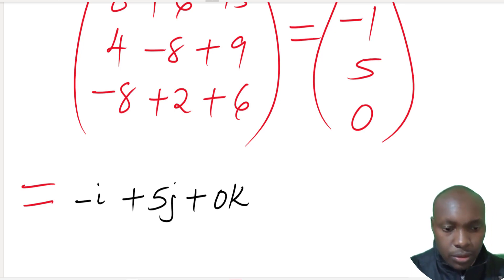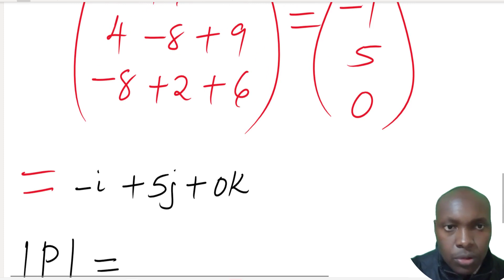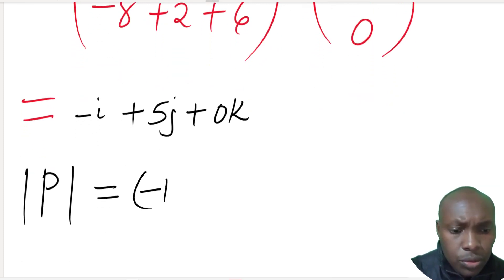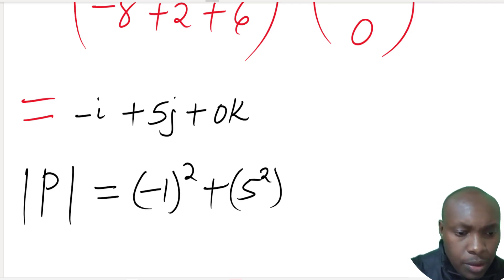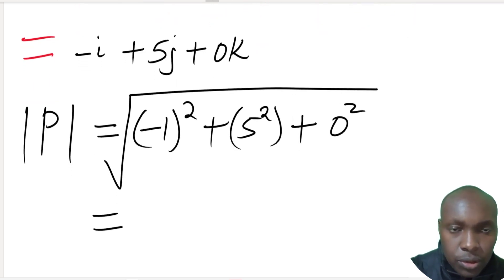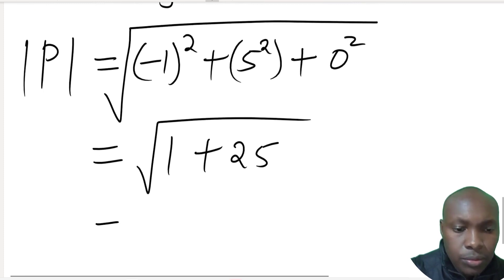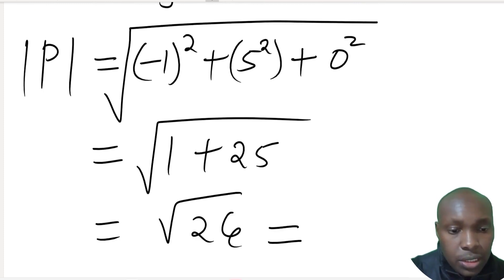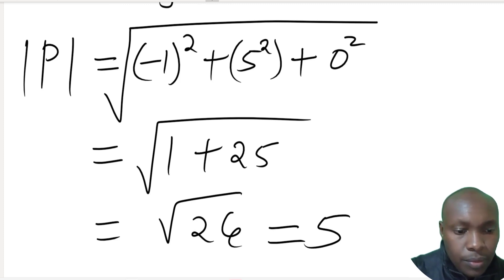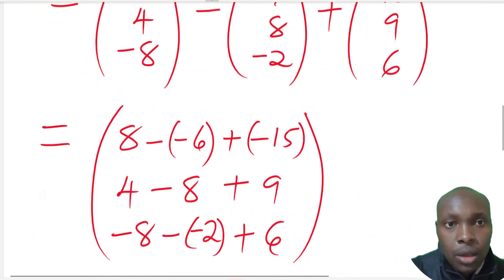Now we find the magnitude of vector p. To get the magnitude, we take each coefficient, square it, sum them, and take the square root. So |p| = √((-1)² + 5² + 0²) = √(1 + 25) = √26, which gives 5.099 to 3 significant figures. That is how we solve the question on the magnitude of a vector.